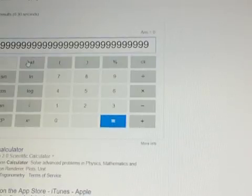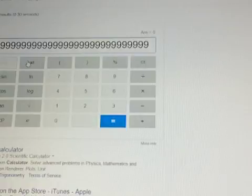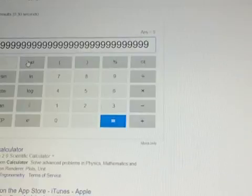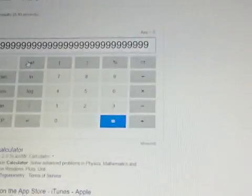If you have three with an exclamation point after it, it means three times two times one. So basically the higher the number, the bigger it is. So yeah, that's what I'm gonna do.